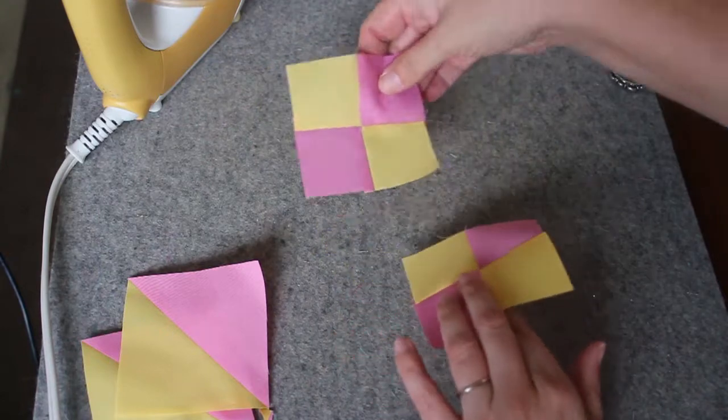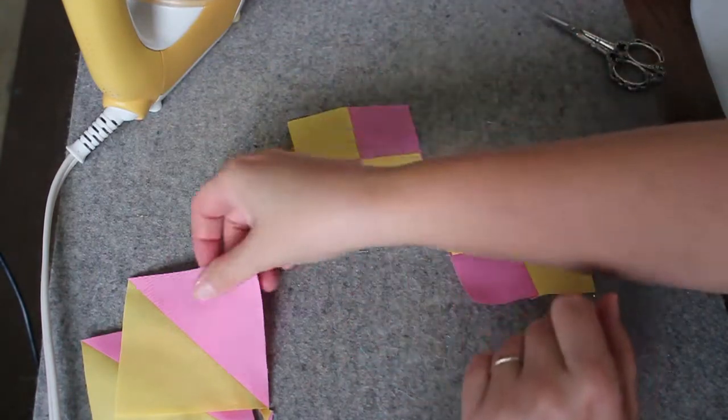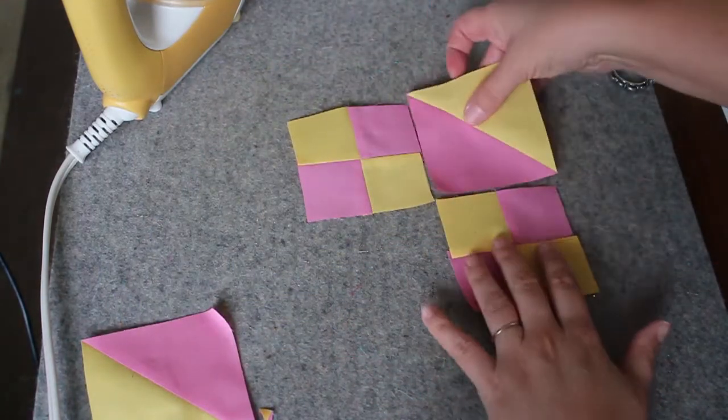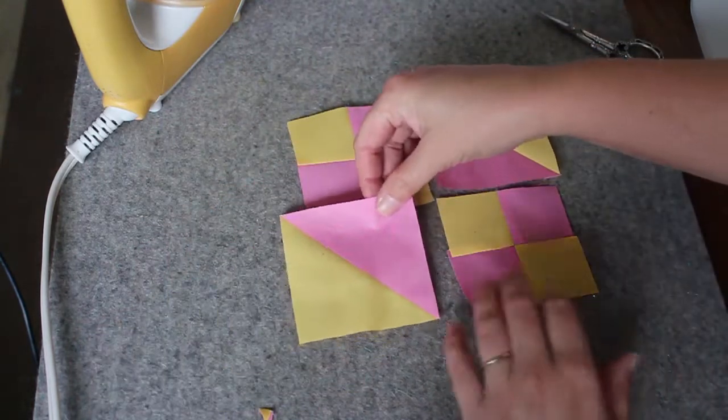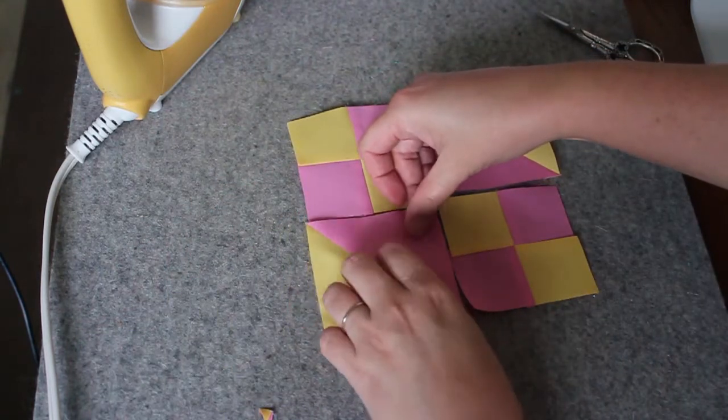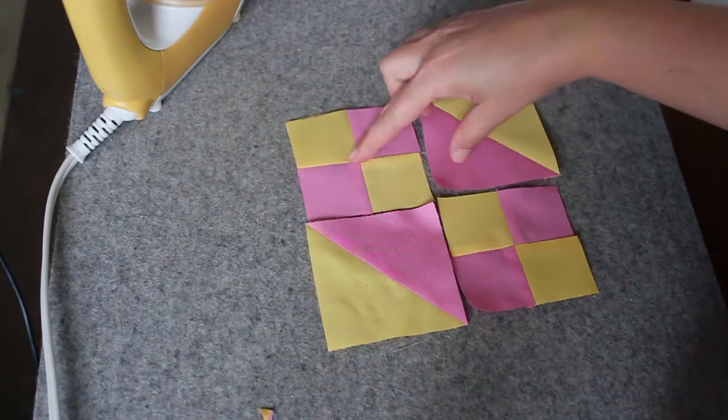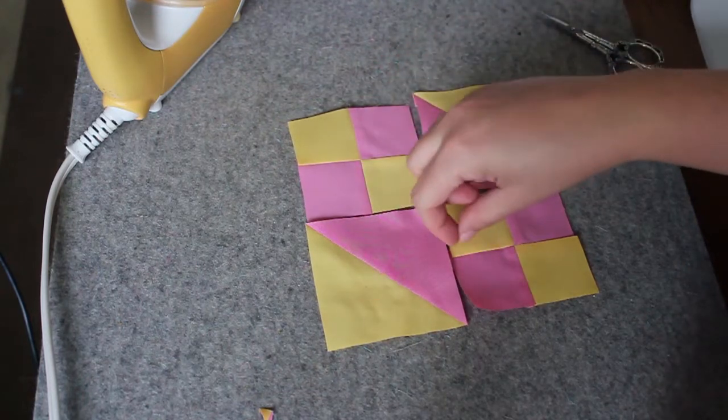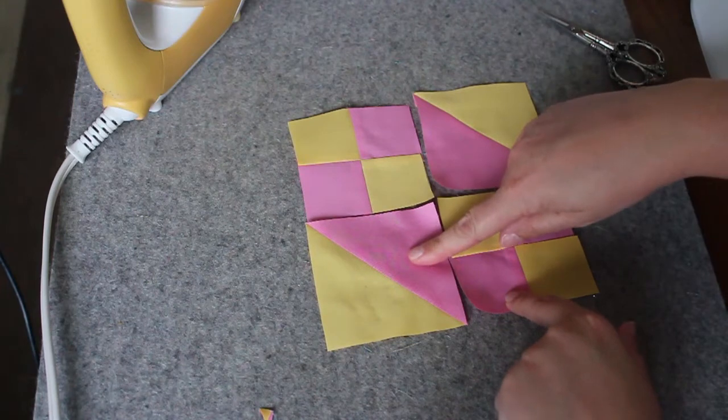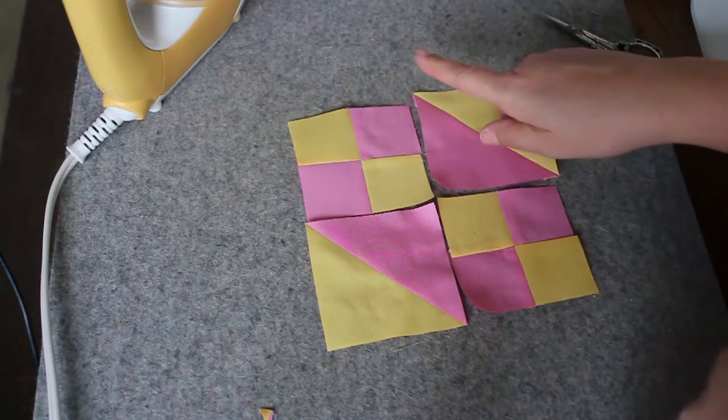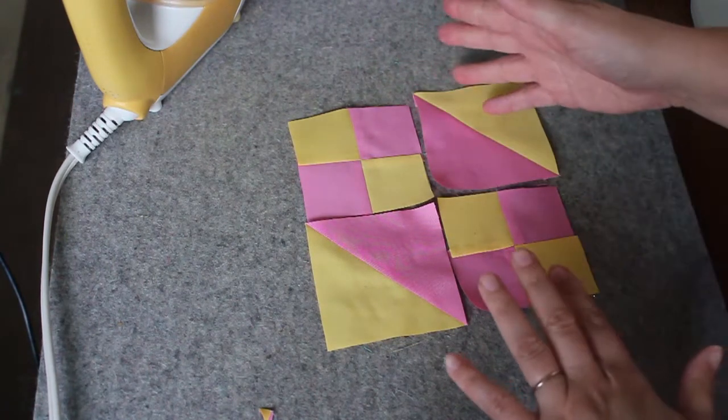And now I'm ready to lay out the whole block. There we go. I'll stitch these two together to make the top row, these two together to make the bottom row. I'm going to press towards the half square triangles. And then I'm going to stitch the top and bottom together. And I'll have my block done.